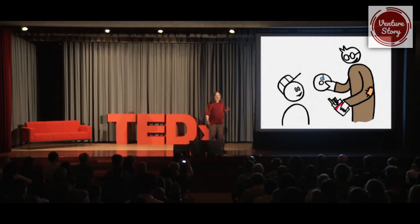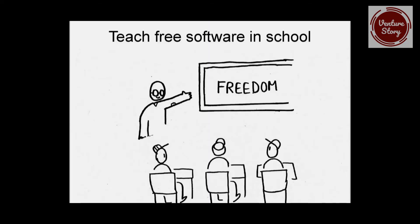Another obstacle is that lots of schools teach non-free software, which is basically like teaching kids to smoke tobacco. It's implanting dependence, which is the opposite of what schools should do. A school should prepare citizens to live in a strong, capable, independent, cooperating, and free society, which means teaching free software in the school.